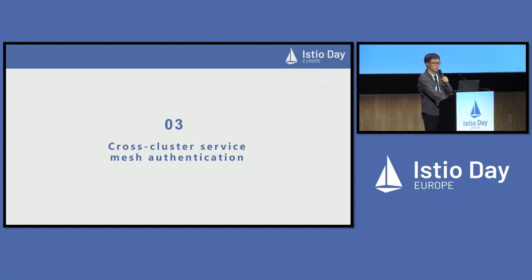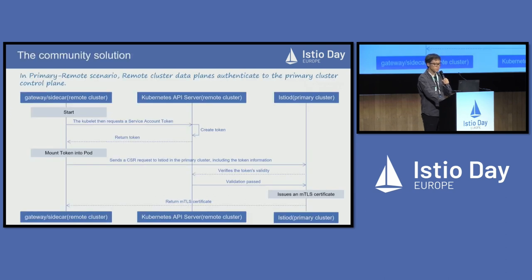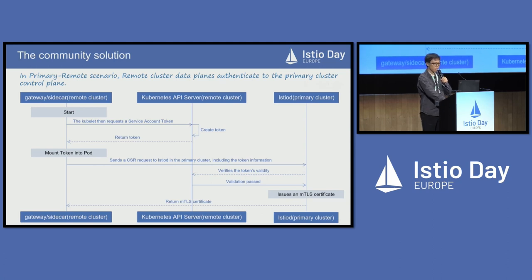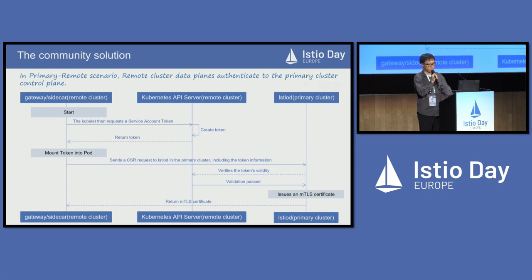Let's talk about how we meet the third requirement: cross-cluster service mesh authentication. In the community solution, in a multi-cluster scenario, when a gateway or sidecar is initiated in a remote cluster, it mounts a volume named istio-token. The kubelet on the remote cluster then requests a service account token from the API server of that same remote cluster, which is mounted into the data plane container. The data plane then sends the CSR request to Istiod in the primary cluster, including the token. Istiod verifies the token's validity with the API server of the remote cluster, and upon successful validation, issues an mTLS certificate and sends it back to the data plane container.